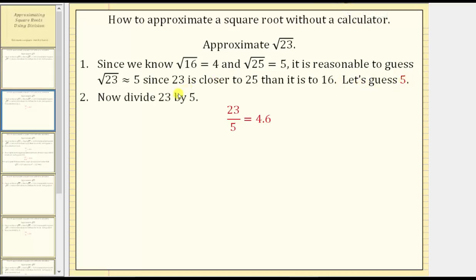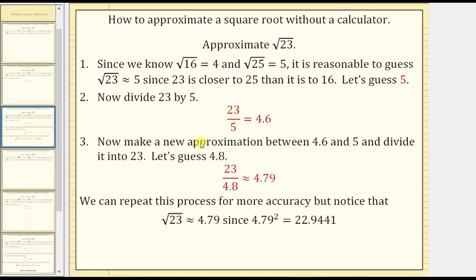The next step is to divide 23, the radicand, by the first approximation of 5. Notice 23 divided by 5 equals 4.6. The next step is to make a new approximation between the quotient of 4.6 and the original approximation of 5, and then we divide this into 23 again. Let's guess 4.8, because 4.8 is between 4.6 and 5.